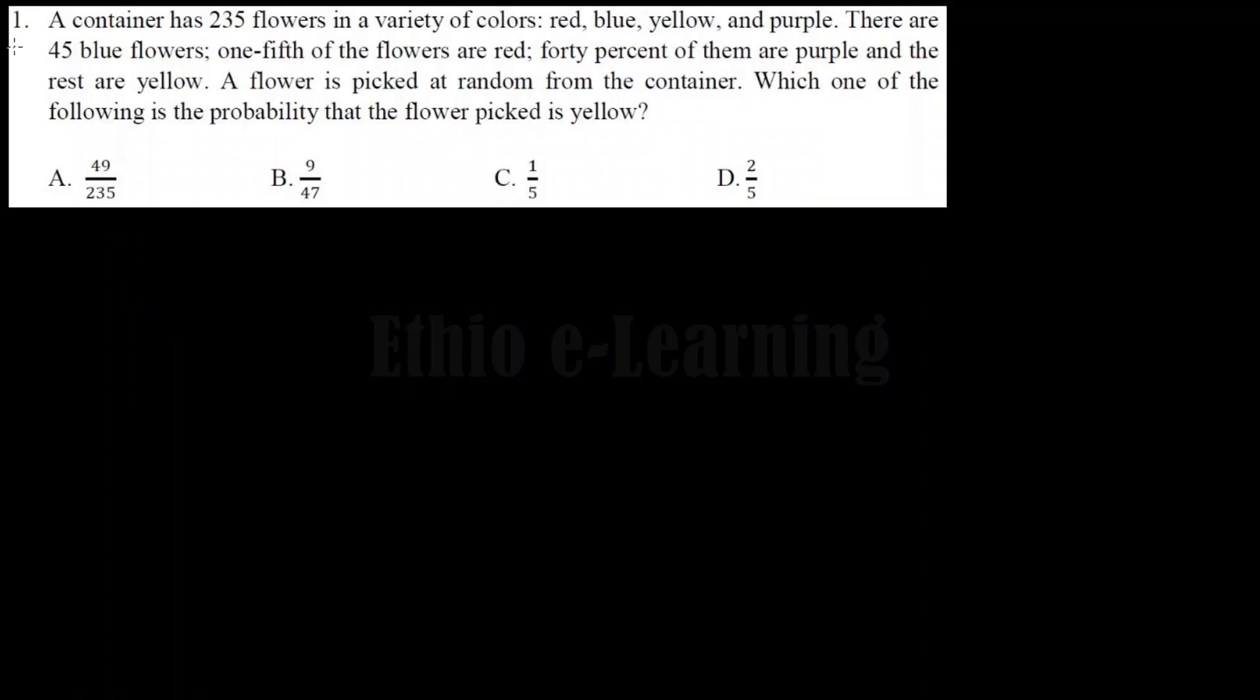A container has 235 flowers in a variety of colors: red, blue, yellow, and purple. There are 45 blue flowers. One-fifth of the flowers are red, 40% of them are purple, and the rest are yellow. A flower is picked at random from the container. Which one of the following is the probability that the flower picked is yellow?